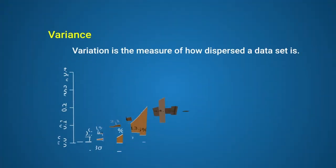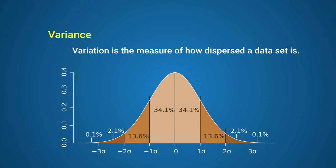Variance is the measure of how dispersed a data set is. In other words, it measures how spread out the values of a data set are.